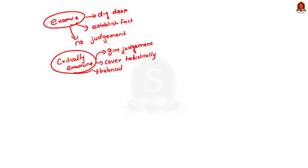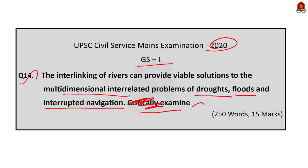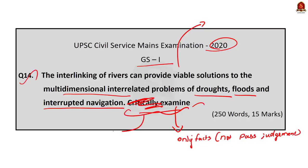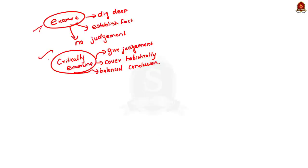Let me explain with an example. If instead of 'critically examine,' just 'examine' is given, you have to write about the major facts relating to interlinking of rivers but should not write whether those facts are right or wrong — just state facts. But when 'critically examine' is given, you must write facts and also whether the given fact is good or bad, and arrive at a balanced conclusion — that is, give a judgment.